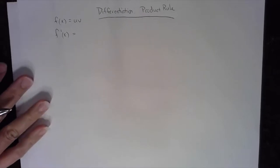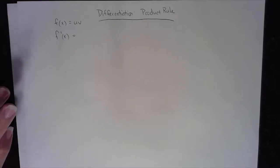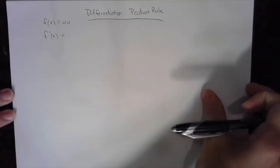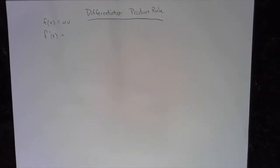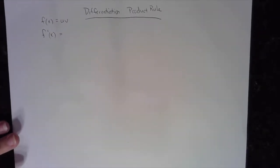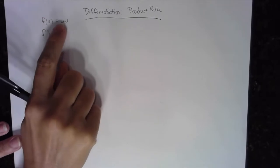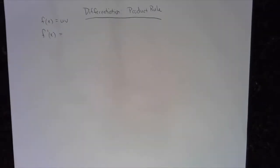Hi everyone. Today we're going to do a little bit of differentiation — this would be calculus one, the product rule, one of the first big-time rules after you learn basic differentiation. The product rule is used when you have a product of two expressions. I'm going to call f a function equal to u times v, where u is an expression of x and v is an expression of x.